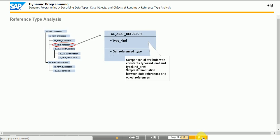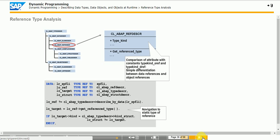When you analyze a reference type, that is the type of a reference variable, the inherited TYPE_KIND attribute allows you to differentiate between object references and data references. However, to determine the details of the static type of the reference variable, use the GET_REFERENCED_TYPE navigation method. This method returns a reference to another description object. This description object can be an instance of class CL_ABAP_STRUCTDESCR if the reference variable was created with a structure type. However, if you create the reference variable with reference to a class or an interface, GET_REFERENCED_TYPE returns instances of the CL_ABAP_CLASSDESCR class respectively.